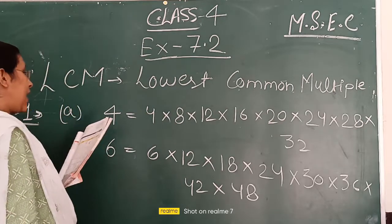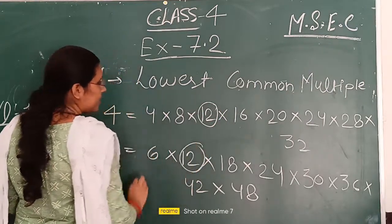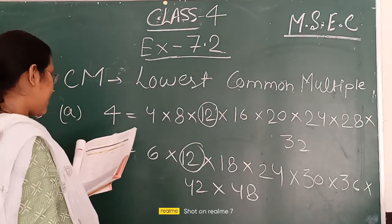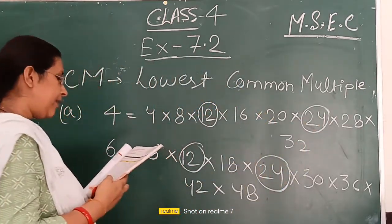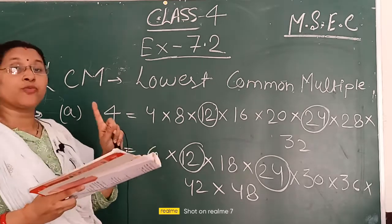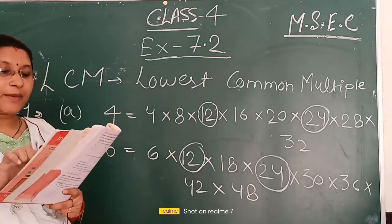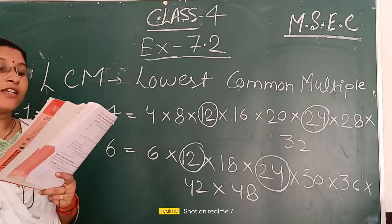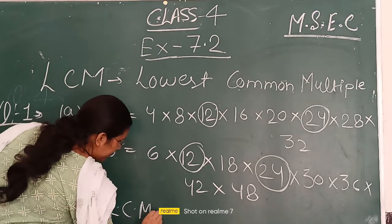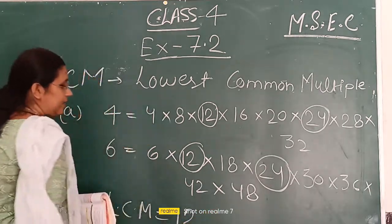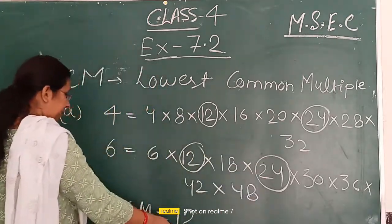Now you can see the common multiples. The common multiples are 12 and 24. The common multiple difference is 12. LCM is 12.